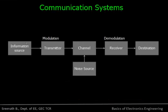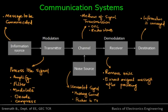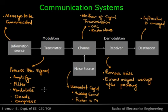Coming to the general block diagram of the communication system: you have a source of information, a transmitter, a channel, a receiver, then the destination, and also a source of noise. The information source contains the message to be communicated, which is generated at the source. The transmitter processes the signal — this includes amplification, filtering out unwanted signals, modulating it, coding it, converting from analog to digital form, and compressing or reducing the size.